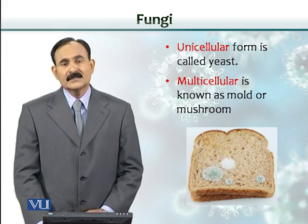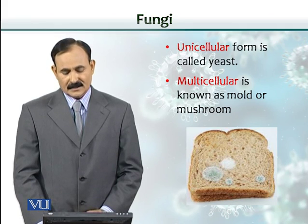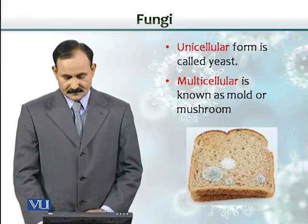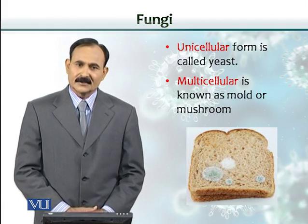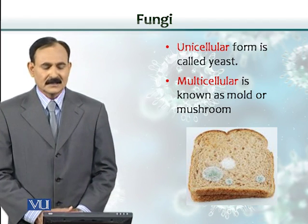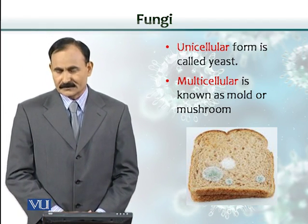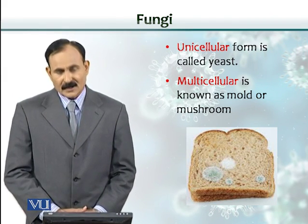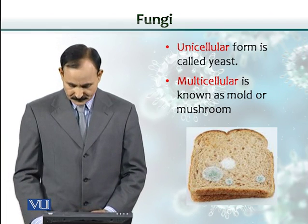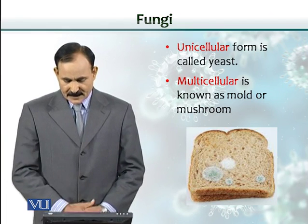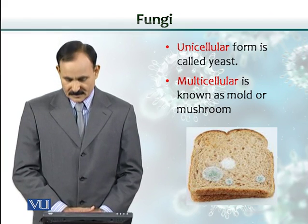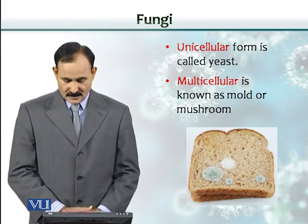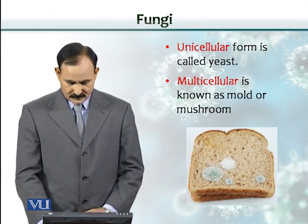Fungi can be unicellular, and if they're unicellular we call them yeast. When they become multicellular, the environment can change them into either yeast or mold. When they acquire multicellular characteristics, we call them mold or mushrooms. This is an example of a moldy bread — as you can see, the mold is growing on the bread loaf.